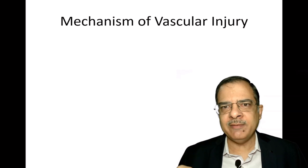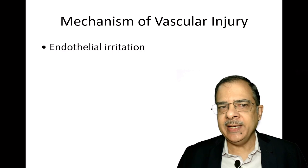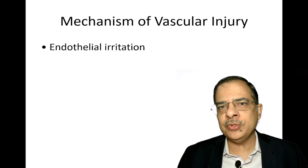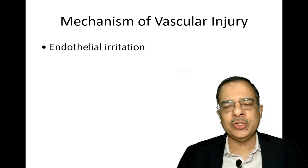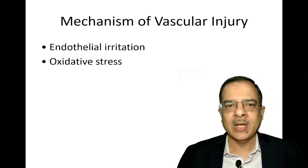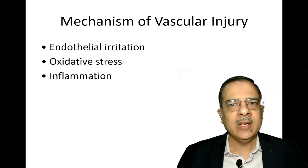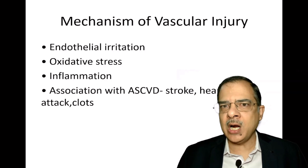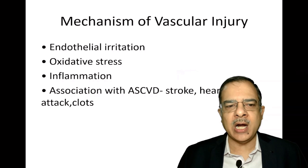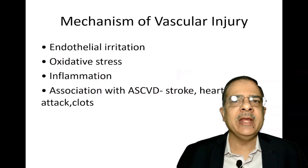How do high homocysteine levels cause vascular injury? Elevated levels lead to endothelial irritation. Remember, homocysteine is present at normal levels in all human beings, but if the level increases, extra homocysteine leads to endothelial irritation, which causes oxidative stress on the blood vessels. Inflammation occurs, and that inflammation is the reason for atherosclerotic cardiovascular diseases like stroke, heart disease, or thrombus formation in the veins, known as deep vein thrombosis.